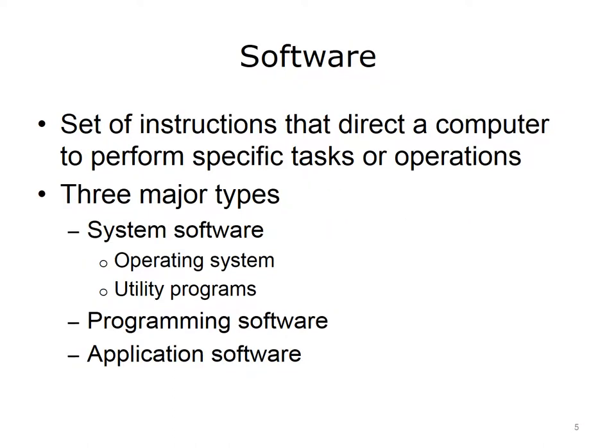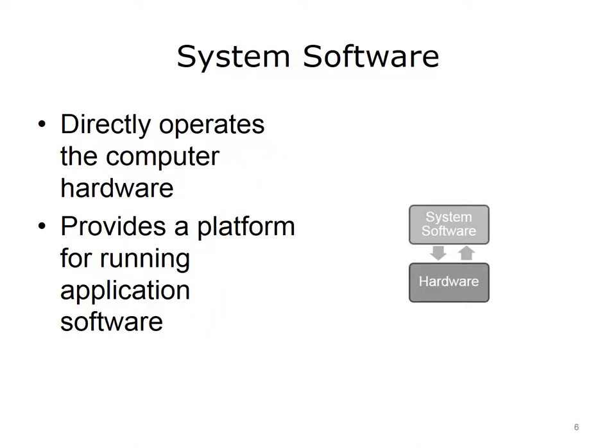This lecture provides a definition of the term software and describes the major types of software. Broadly defined, software is a set of instructions that direct a computer to perform specific tasks or operations. Software is what makes a computer usable. There are three major types of software: system software, which includes the operating system and utility programs, programming software, and application software.